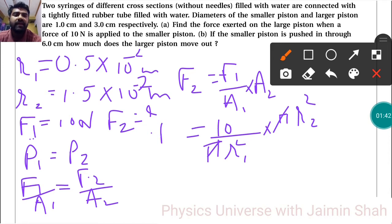Now second, if the smaller piston is pushed in through 6 centimeter, how much does the larger piston move out? So see here we know that volume always remains constant, volume remains constant.